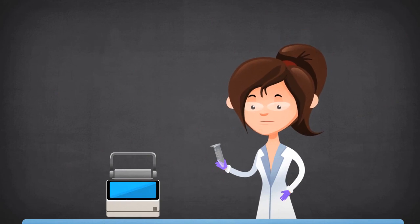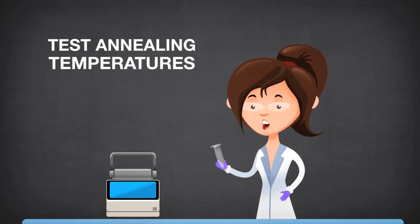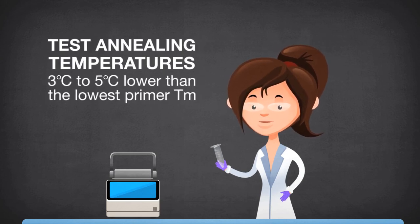The optimal annealing temperature for a particular primer pair can be determined experimentally by testing a range of temperatures around three to five degrees lower than the lowest melting temperature of the two primers.